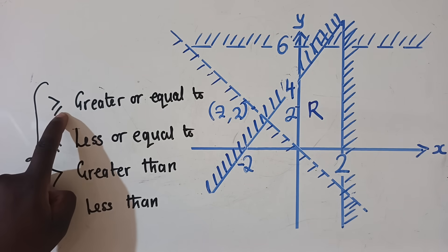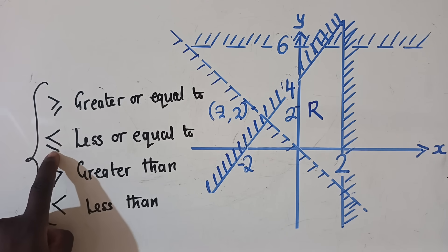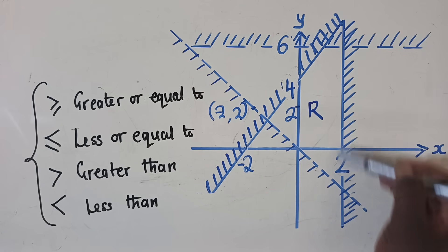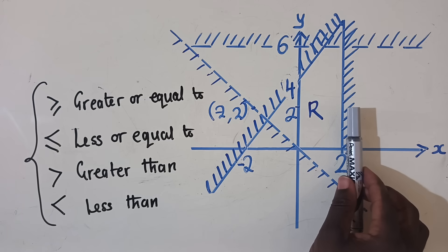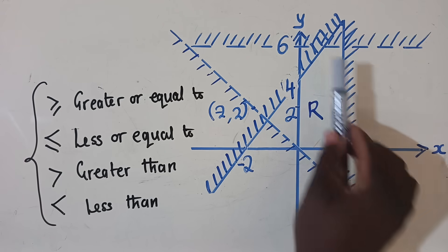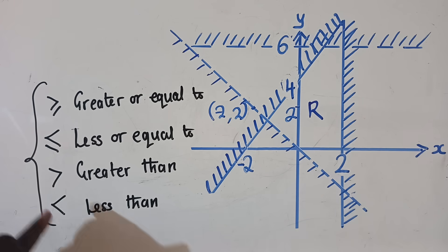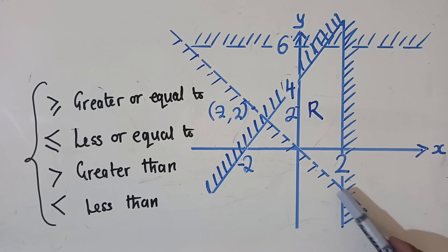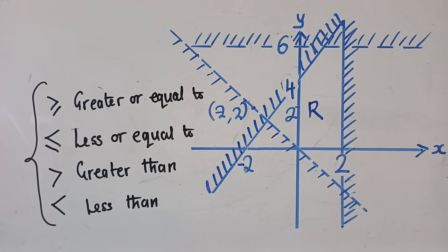For greater than or equal to, this goes with the solid lines — a line which is not dotted. Less than or equal to also goes with the solid lines. These first two deal with the solid lines. The second two, greater than and less than, deal with the dotted lines.